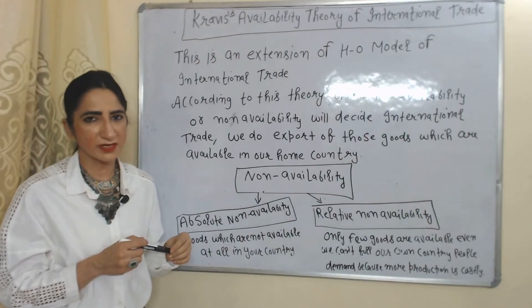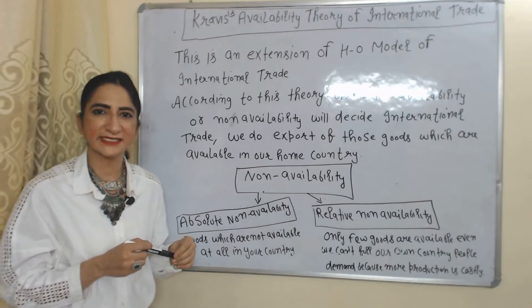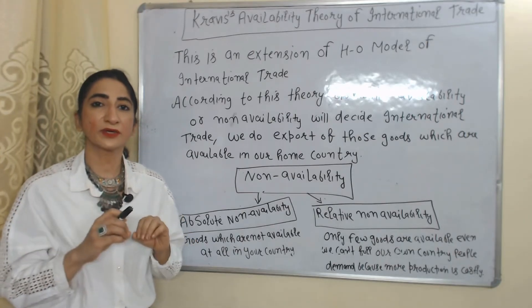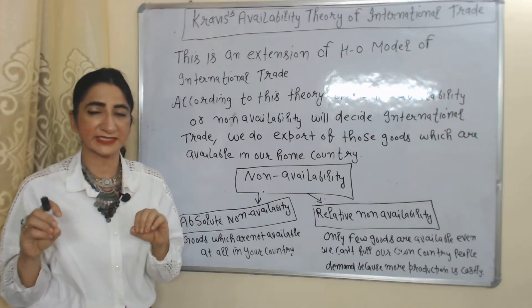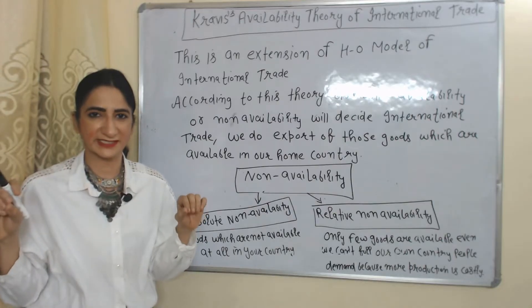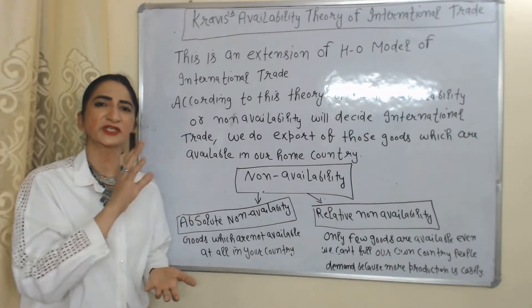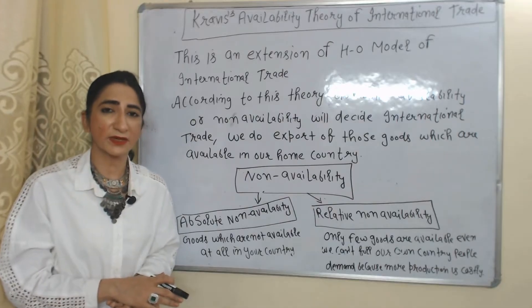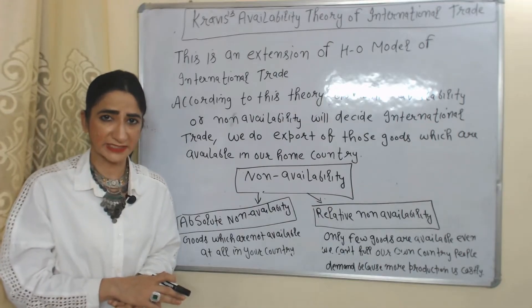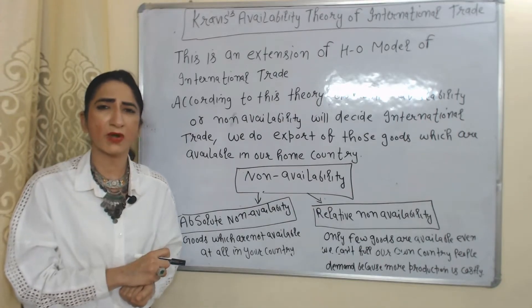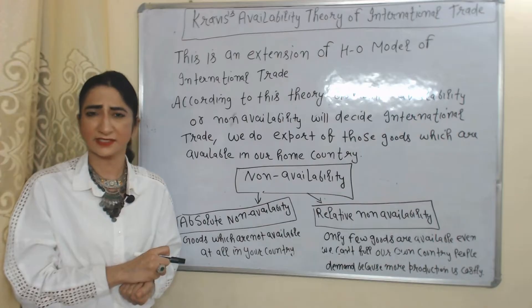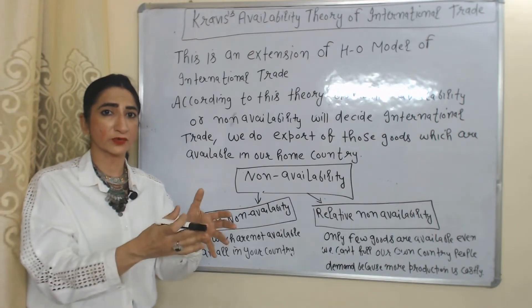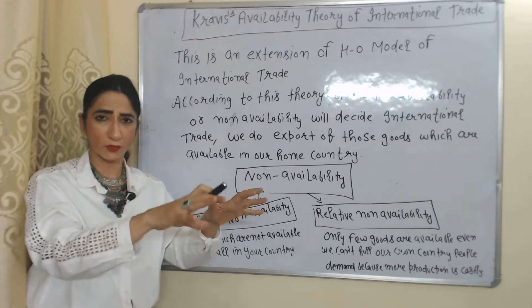Hello everyone, my name is Minusat. I hope you all are staying healthy. Today we are going to talk about Kravis Availability Theory of International Trade. This theory is an extension of the HF model. According to this theory, domestic availability and non-availability will decide international trade. We will do exports of those goods which are available in our home country.